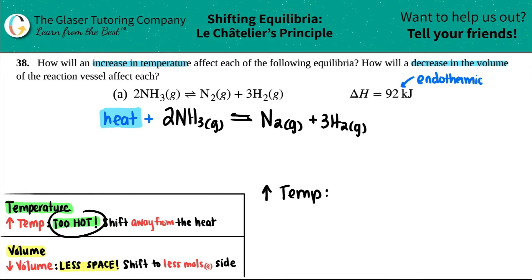Me personally, if it's really hot outside, I'm not going outside. I go away from the heat and stay inside. That's exactly what chemistry solutions do as well. If it's way too hot and you increase the temp, you will shift away from the heat.